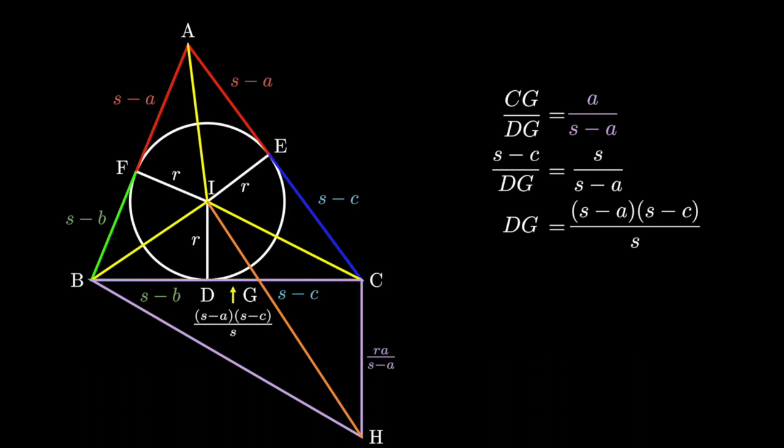Now we'll need to find the last one, s minus b. Since BD equals s minus b, we'll want to consider looking at something relating to the triangle BIG. We already know what BD and DG are. If only there was a way to relate these lengths to the altitude of BIG, or the radius of the incircle. It would be really handy if angle BIG turned out to be right, and, in fact, it is.